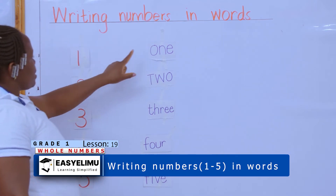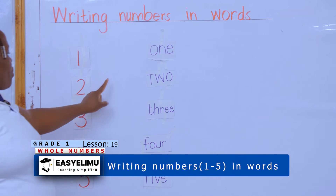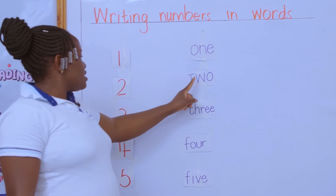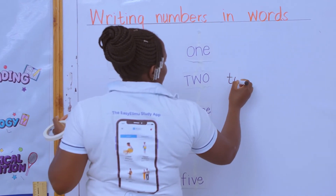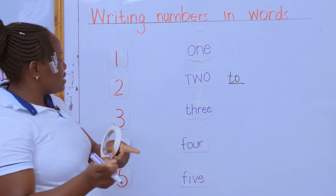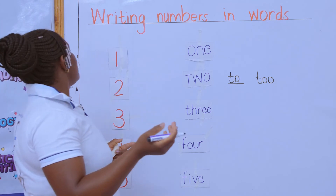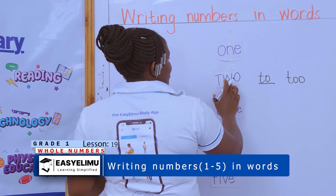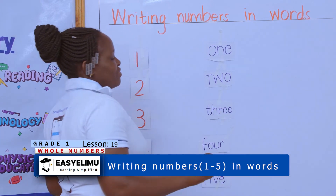Number one the word is 'one,' number two the word is T-W-O, 'two.' In some cases you will find there is 'to' — this means direction: 'I am going to the city, I am going to the market.' And then you'll also find 'too' — this is when something has happened in so much plenty: 'I am too old to walk.' So get the difference: T-W-O is the number, 'to' is for direction.